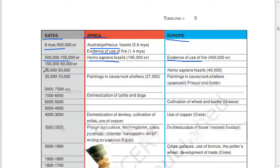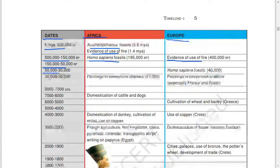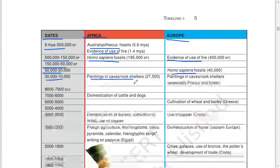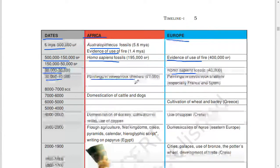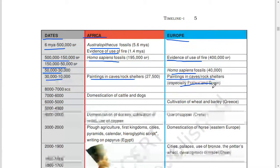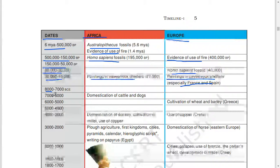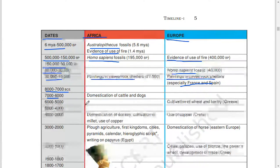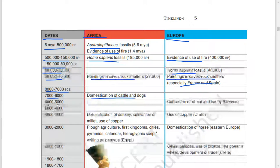1 lakh 50,000 BP. 50,000 to 30,000 BP: Homo sapiens fossils, 40,000 BP. Paintings in caves and rock shelters, 27,500 BP, especially France and Spain. 8000 to 7000 BCE: domestication of cattle and dogs. 7000 to 6000: cultivation of wheat and barley, Greece.